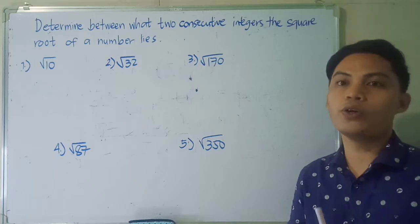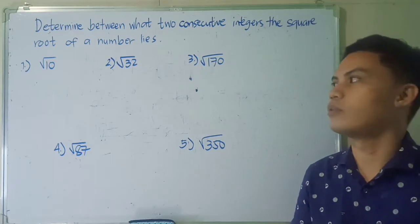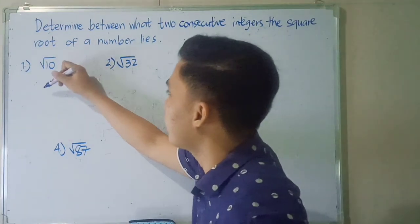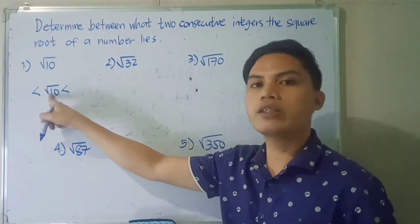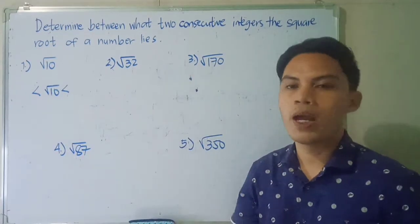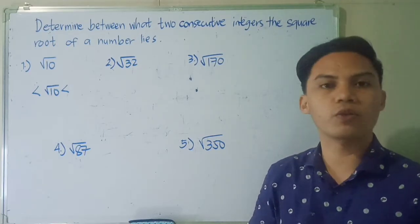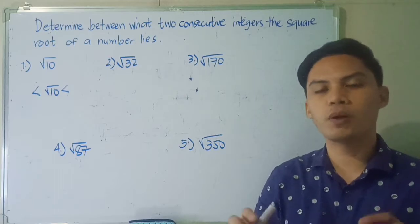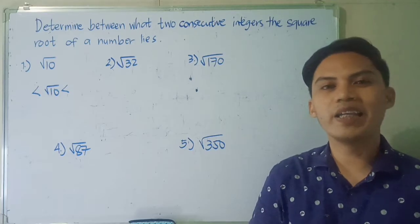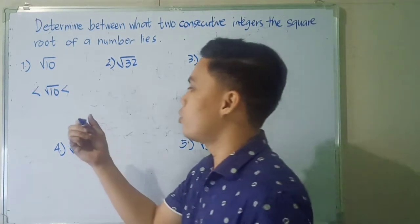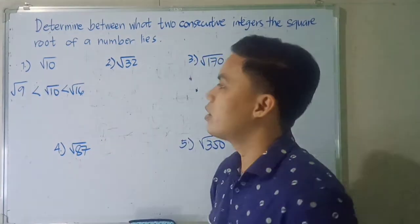So what are the two consecutive integers that the square root of 10 lies between? We place the square root of 10 in the middle. We know that it is greater than a particular perfect square and also less than another perfect square. The two consecutive perfect squares where the numerical value 10 falls between are 9 and 16. So we write square root of 9 and square root of 16.